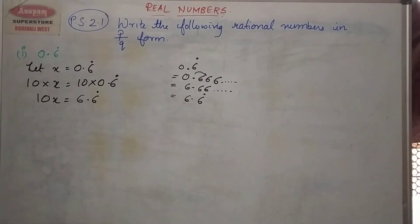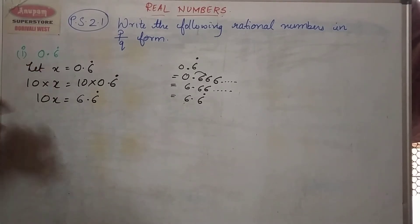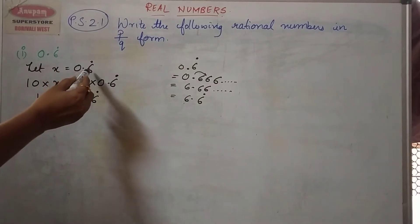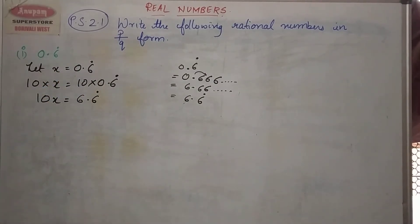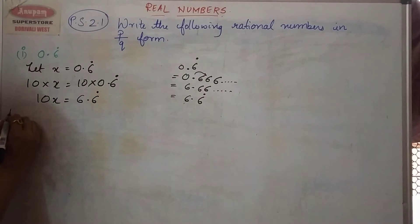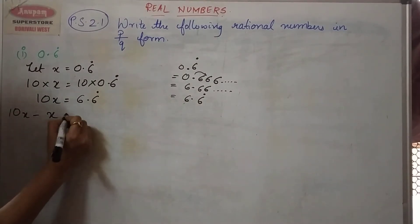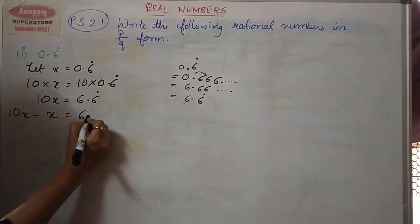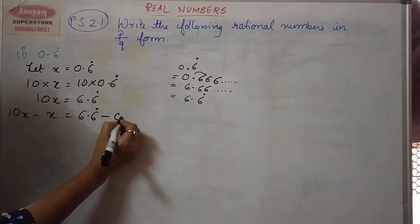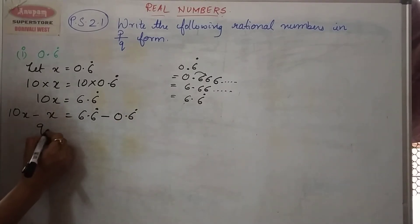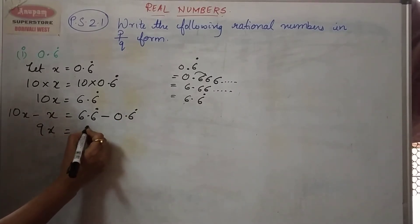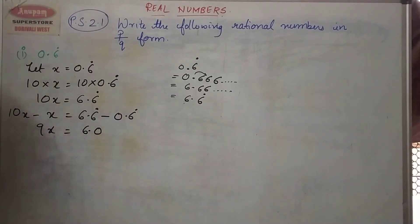The third step is subtracting. We are going to subtract x from 10x, and similarly 0.6 from 6.6. So: 10x minus x is equal to 6.6 minus 0.6, and therefore 9x is equal to 6.0.